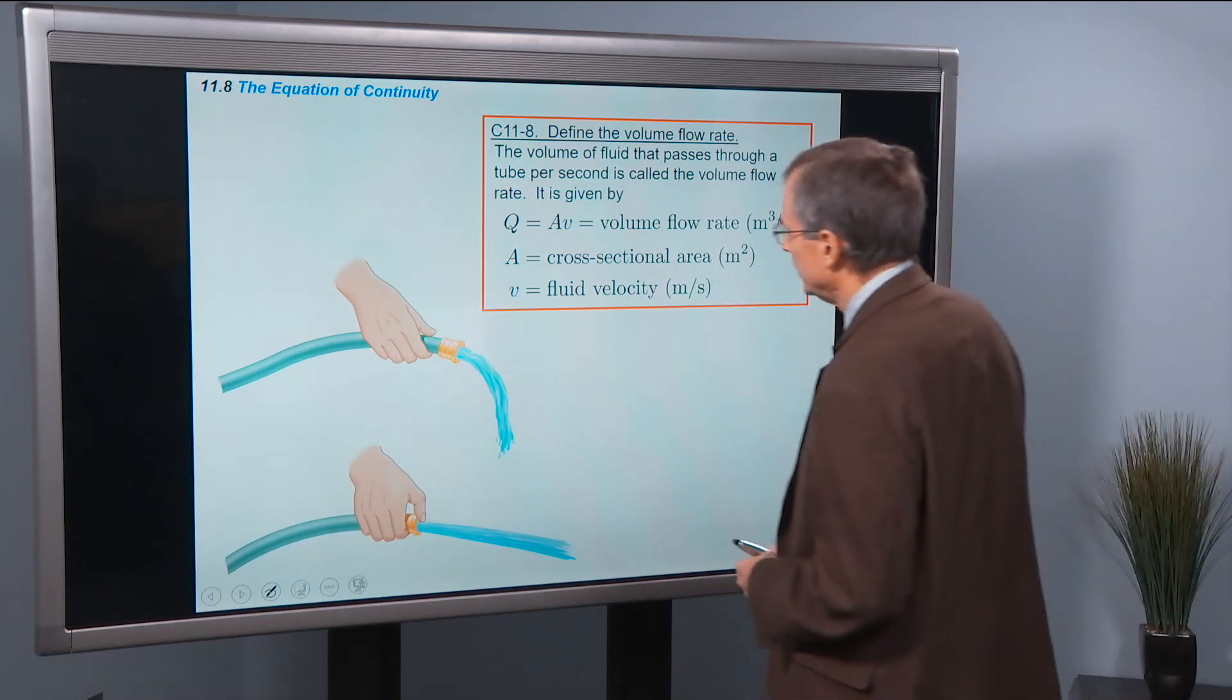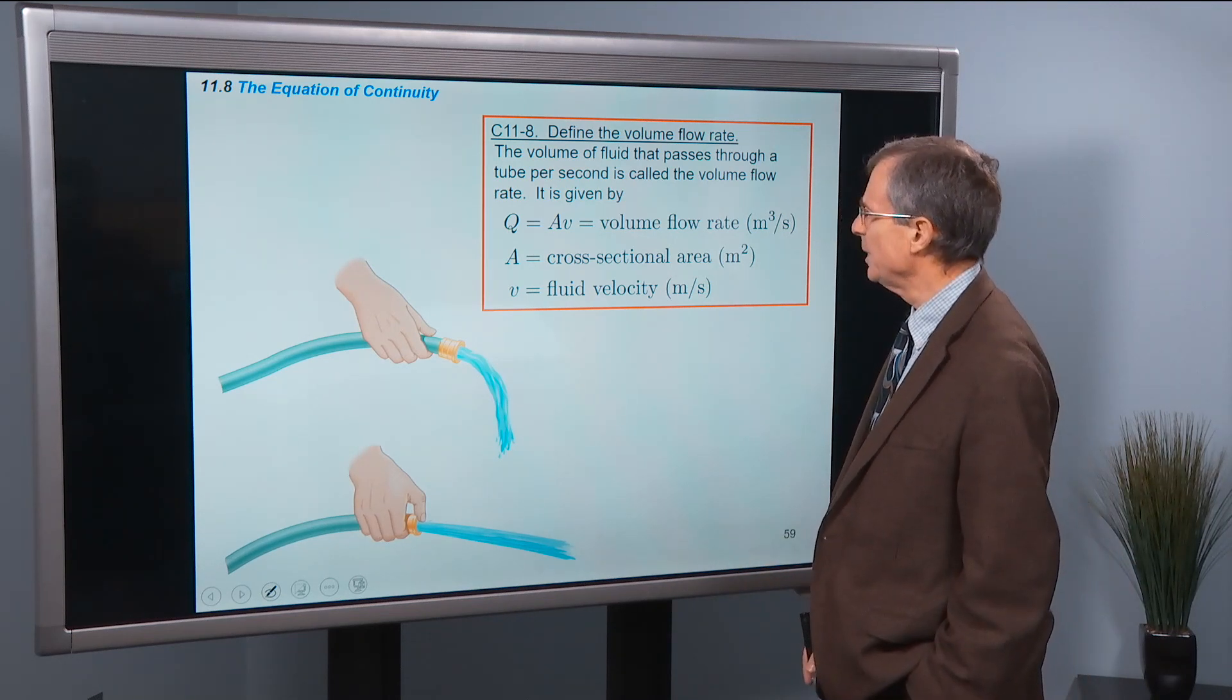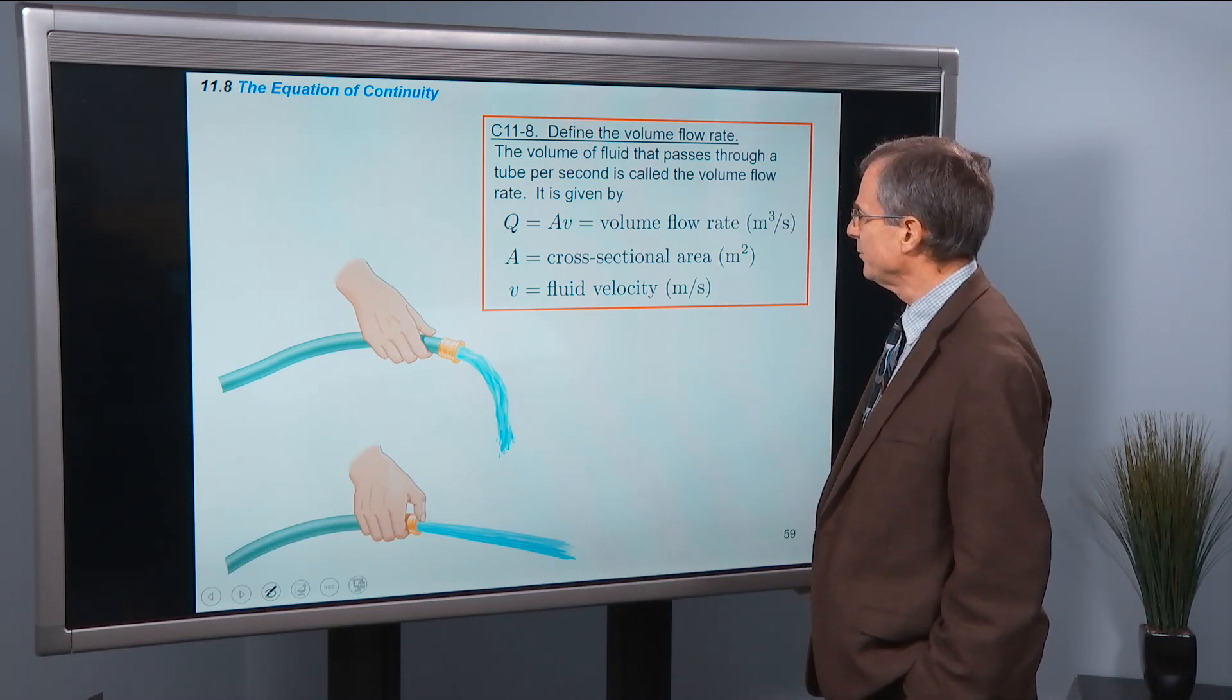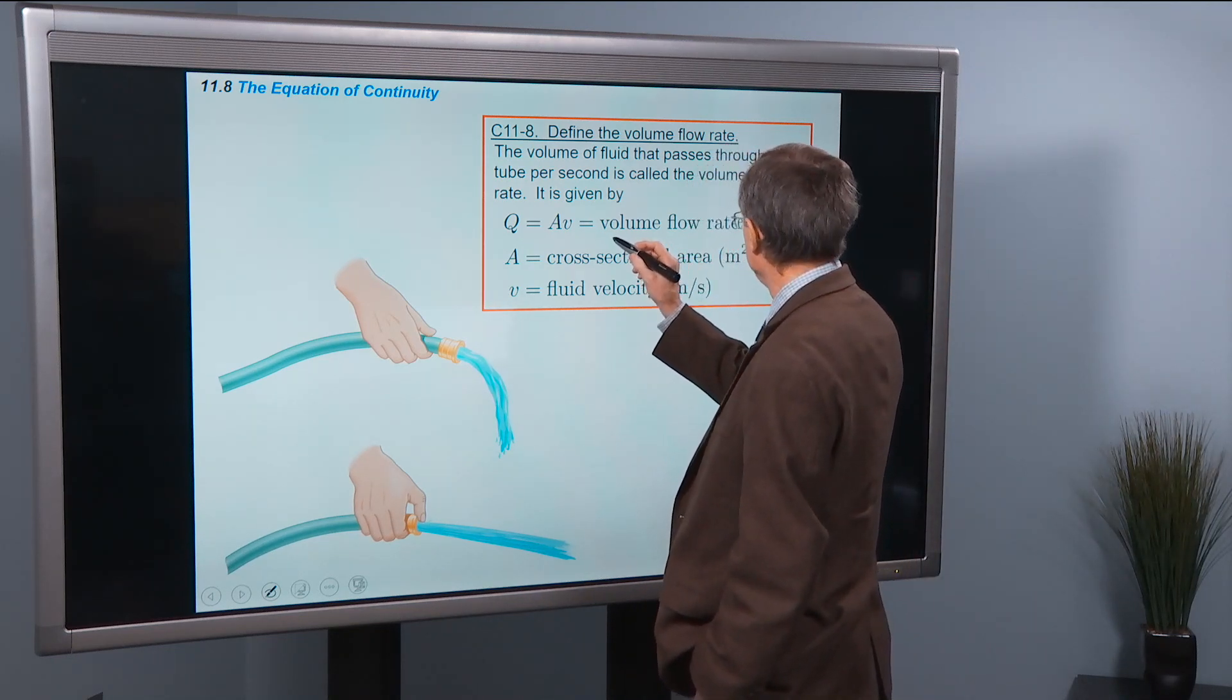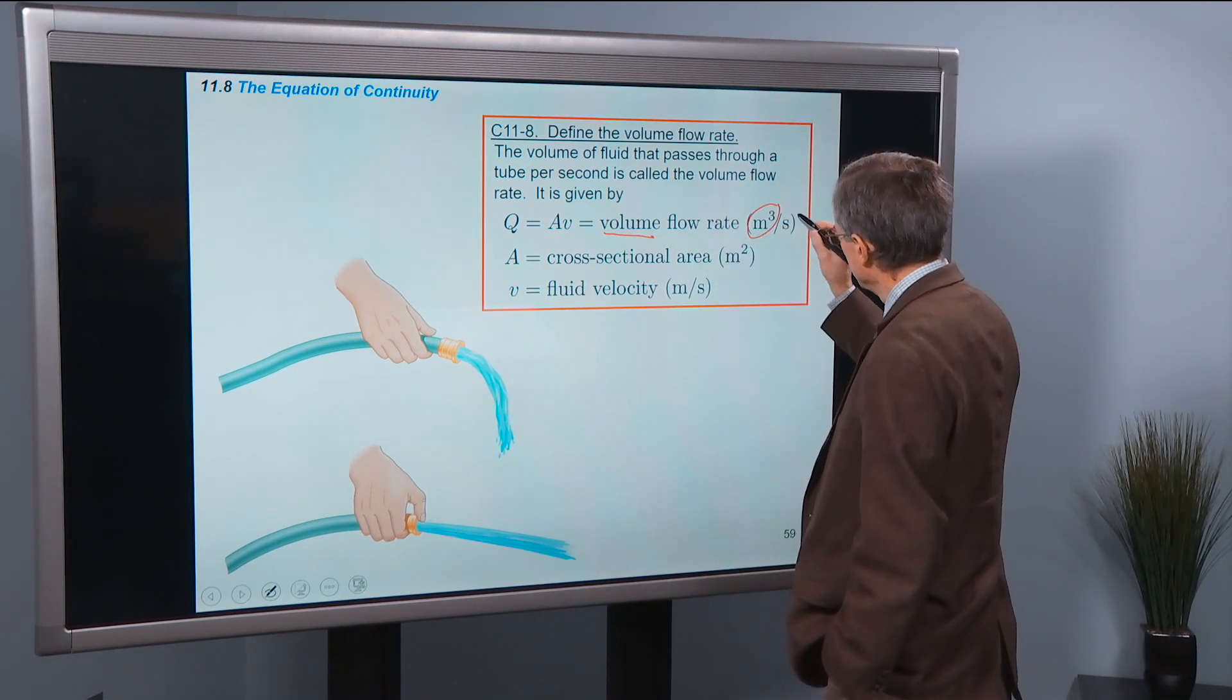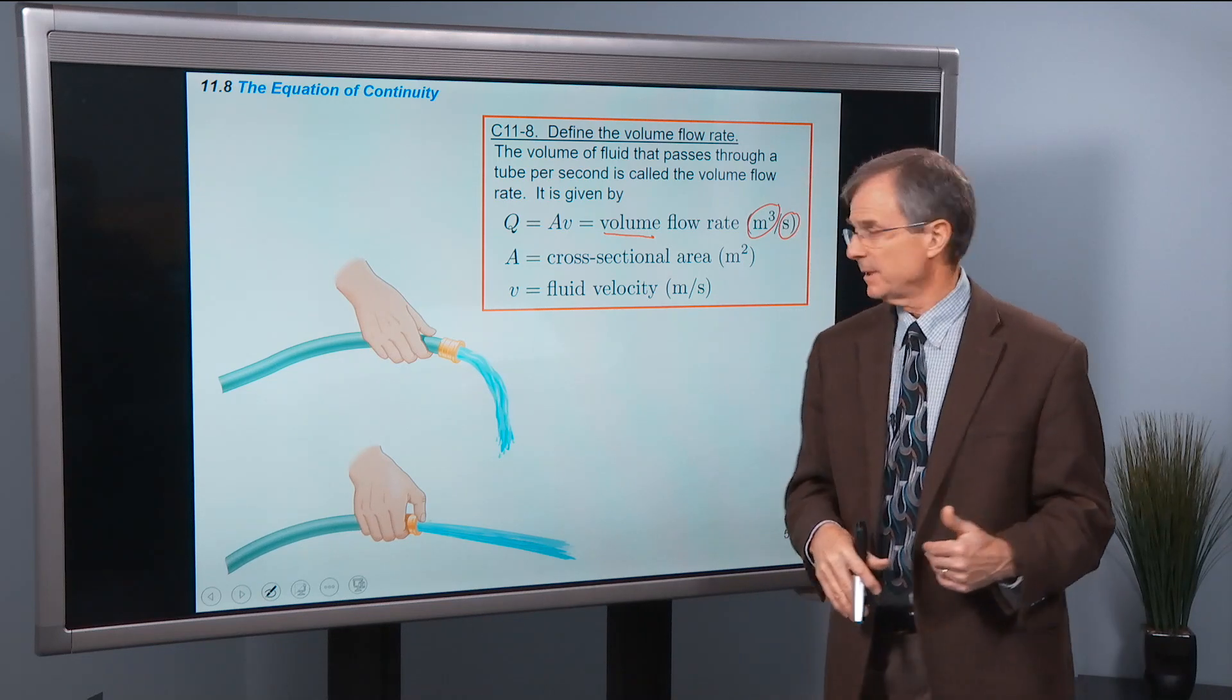So volume flow rate for steady flows. The volume of a fluid that passes through a tube per second is called the volume flow rate. It's a volume divided by a time. It's the volume of the fluid measured in cubic meters divided by the time.